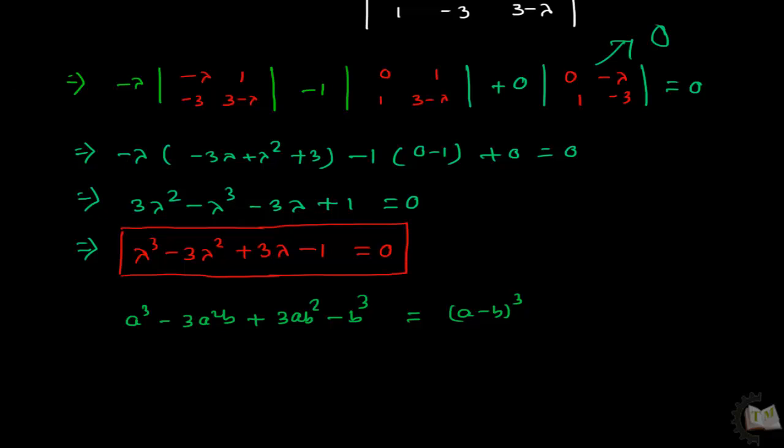If you compare this equation with our found equation, you will get the whole cube of a minus b. In place of a I can write lambda, and in place of b I can write minus 1.